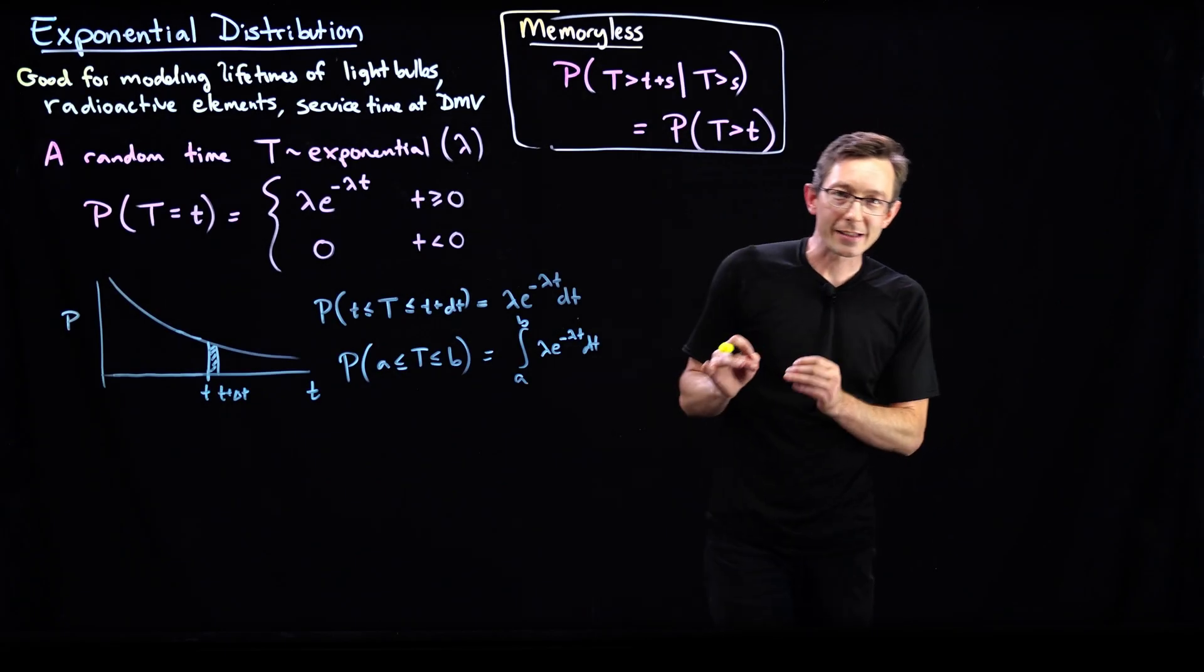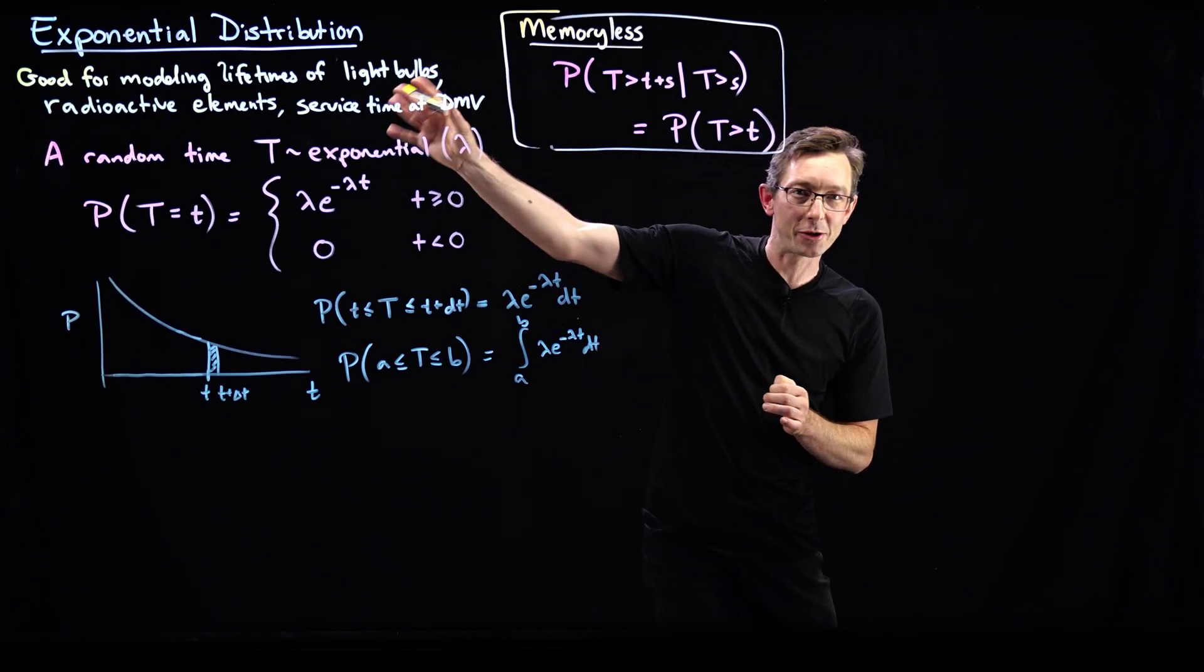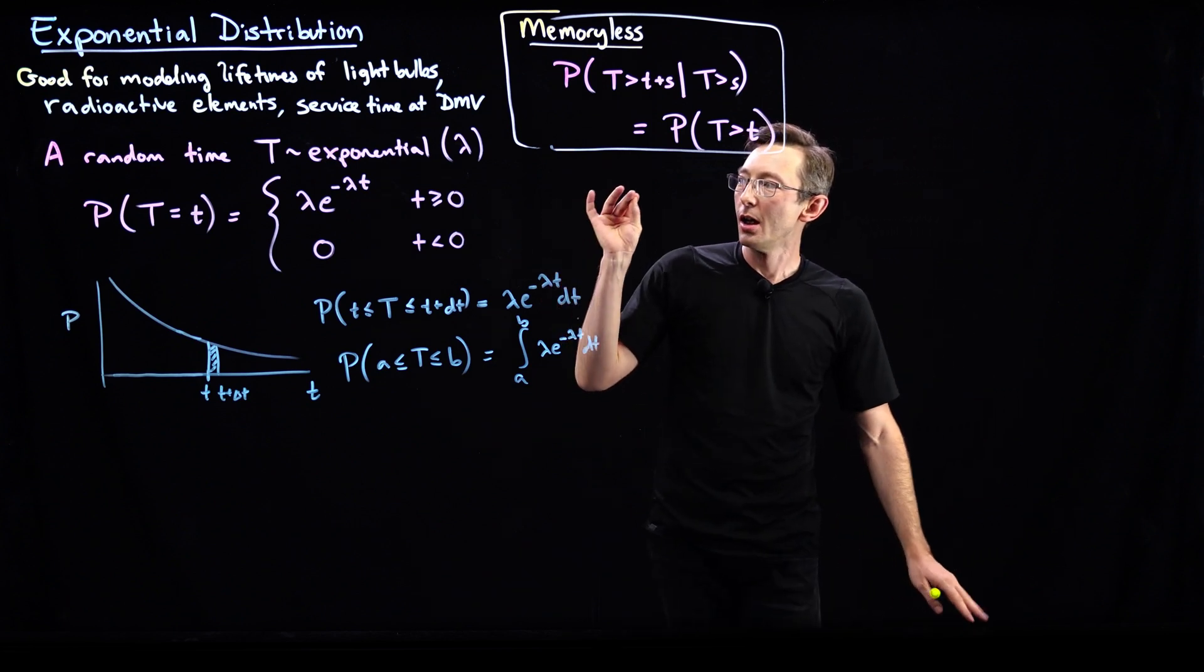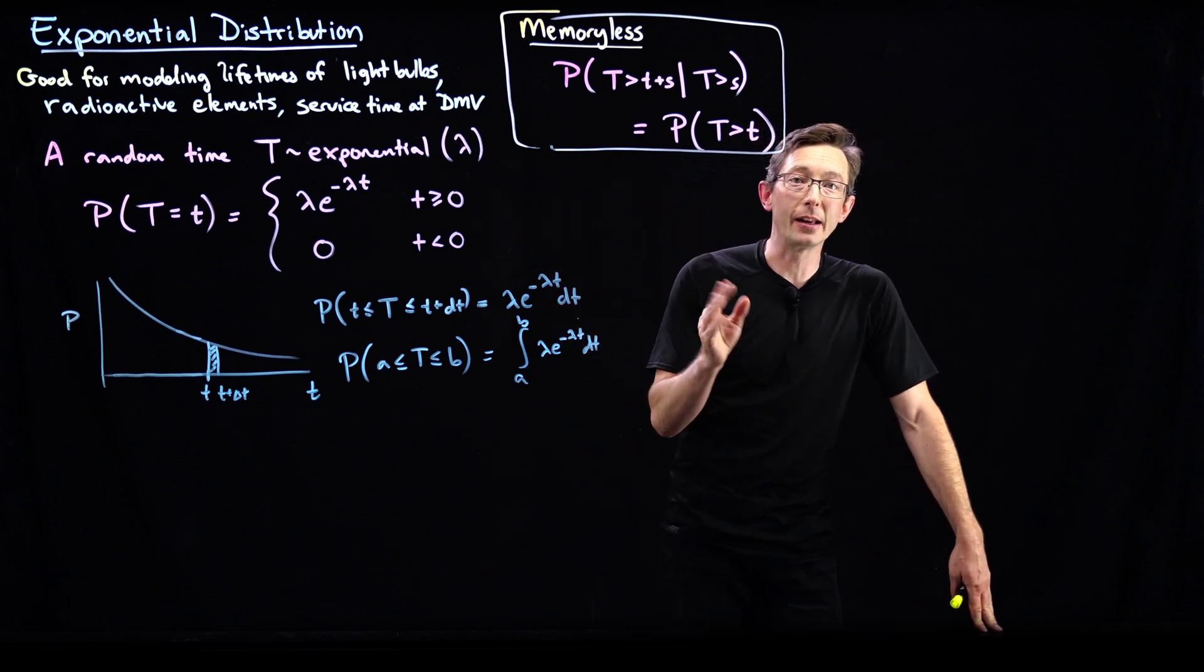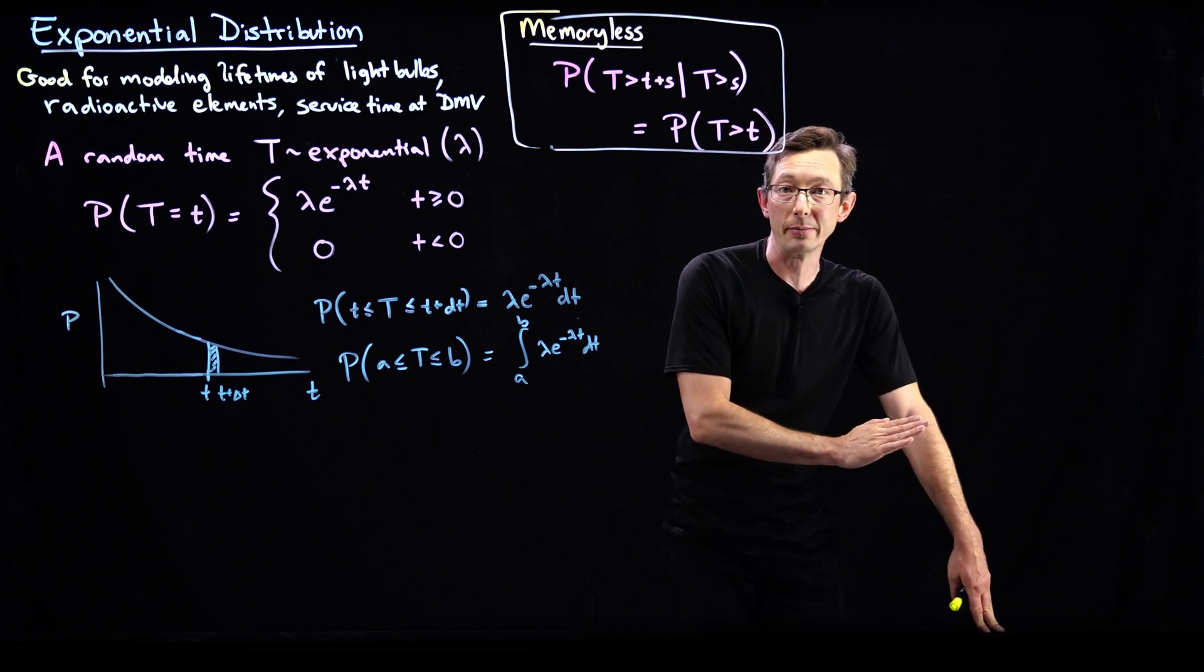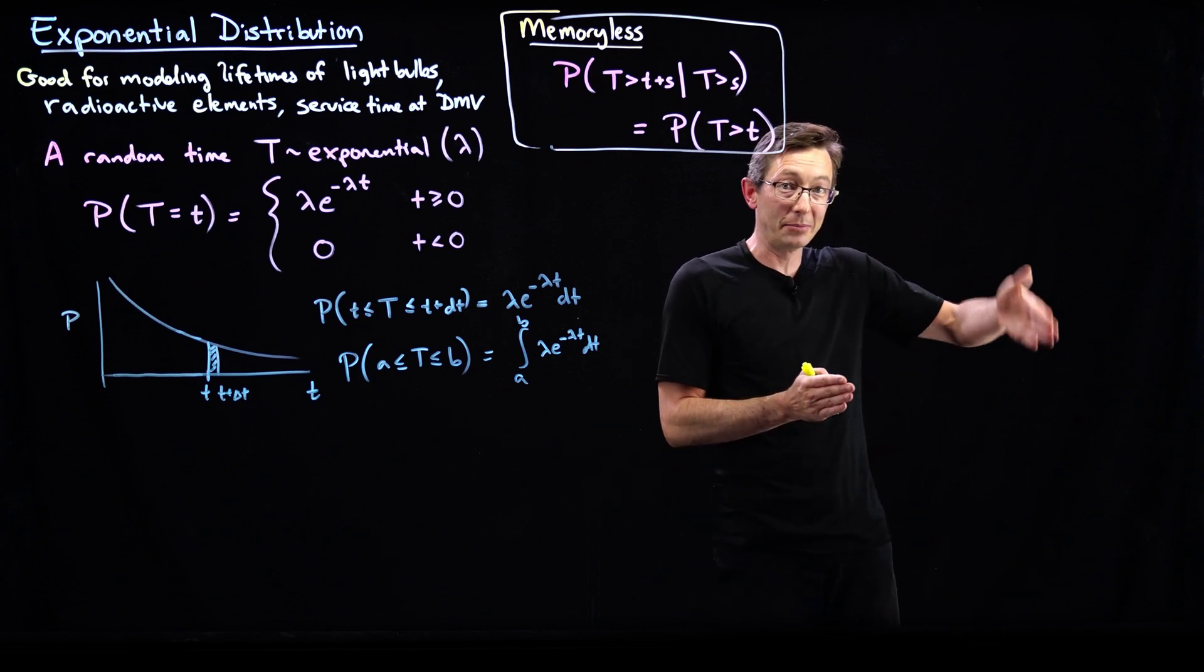Welcome back. So in the last lecture I introduced this exponential distribution, which is a super useful distribution for computing the probability that some kind of rare event like the failure of a light bulb will happen at time t in the future.